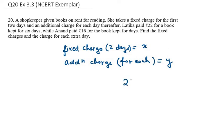For Latika, two days go into the fixed charge, that is x, and the remaining days are four (six minus two equals four). So the additional charge is 4y. Therefore, x + 4y = 22. This is equation number one.